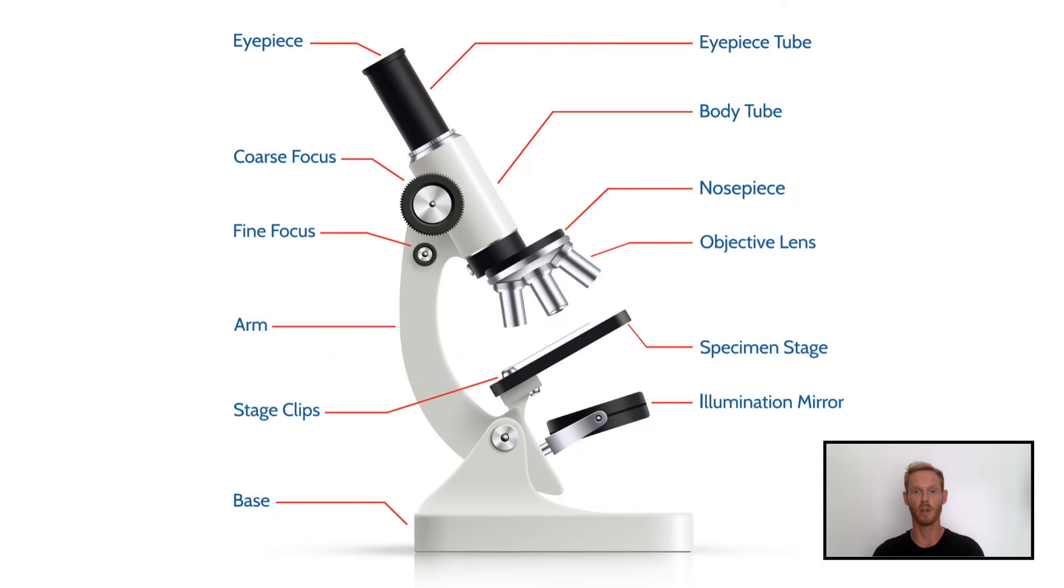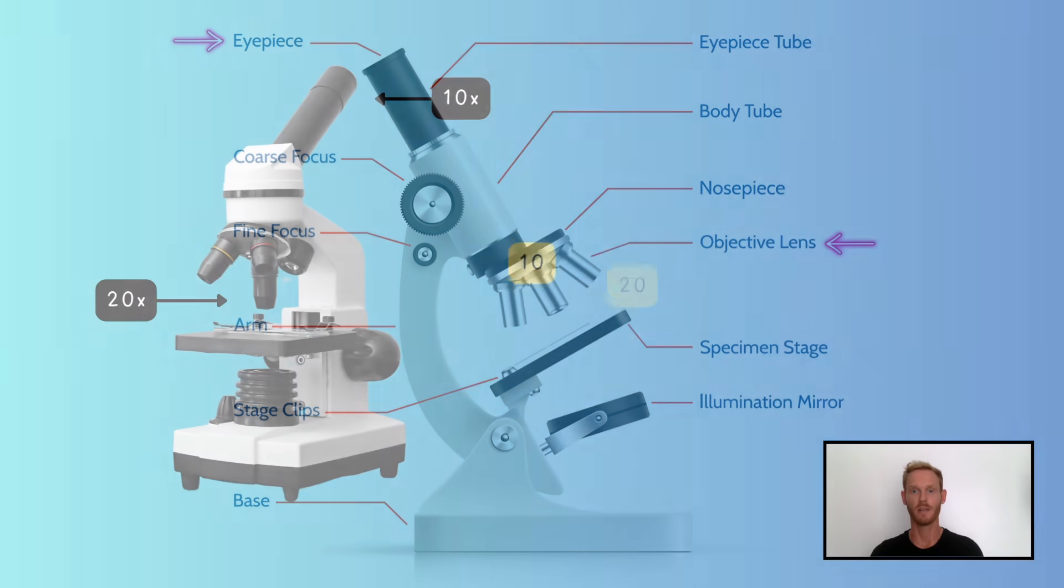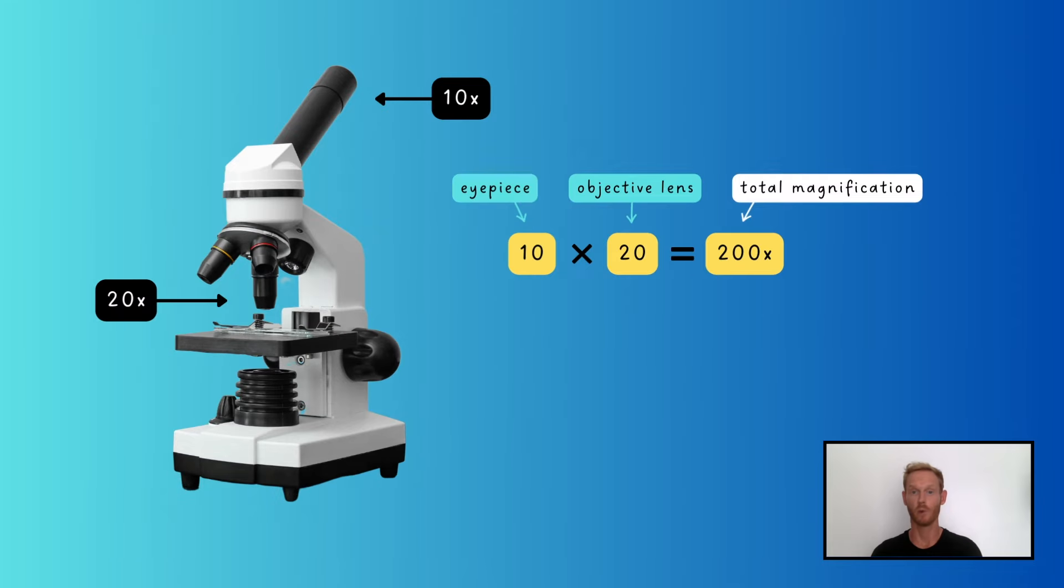Now since the light microscope has both an eyepiece and an objective lens, the magnification of both needs to be taken into account. For example, if a specimen were viewed through a 10 times eyepiece and a 20 times objective lens, it would appear 200 times larger than its actual size.